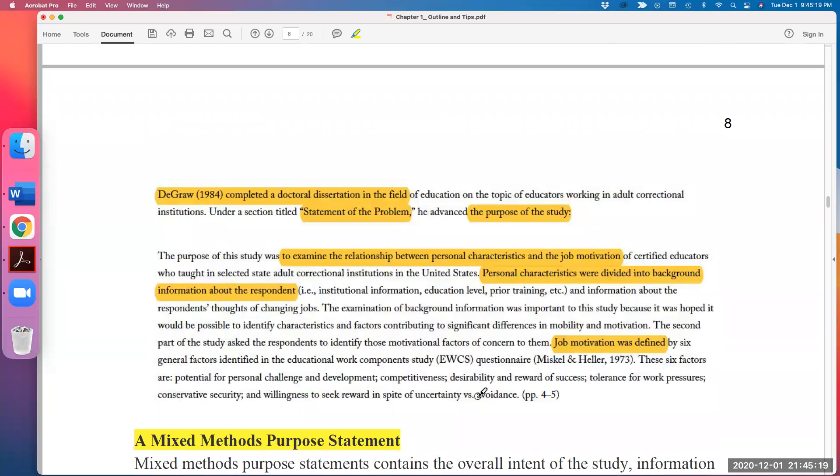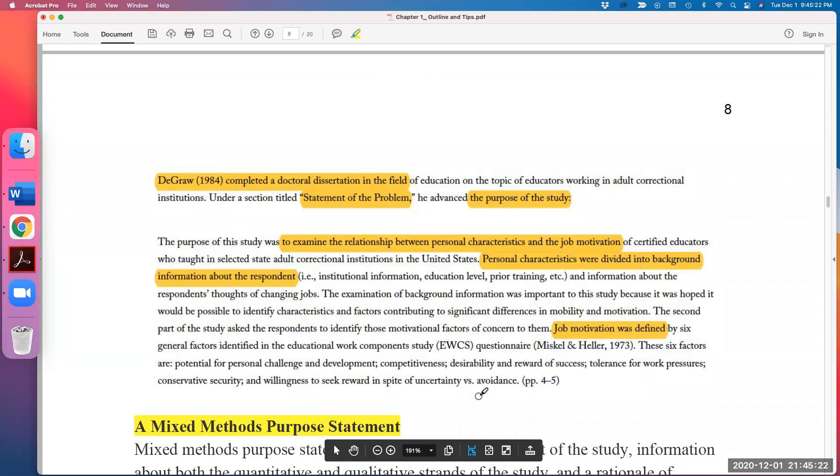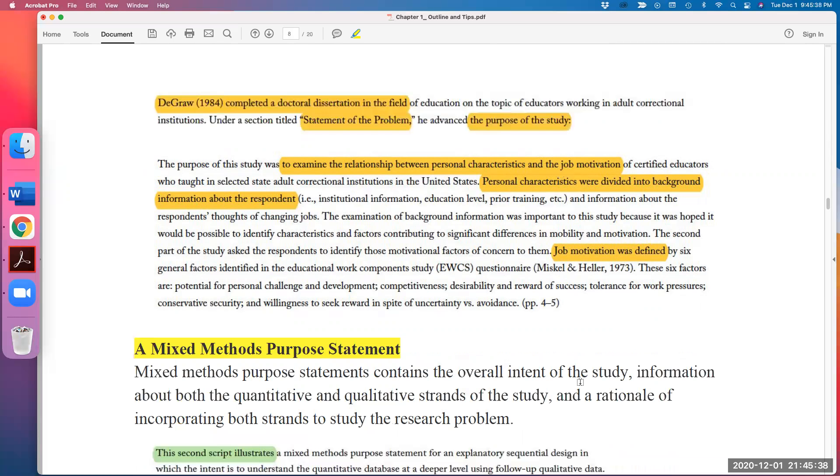I want to stop here for a second. Here is another good example. The purpose of this study was to examine the relationship between personal characteristics and the job satisfaction of certified educators who taught in a selected state adult correctional institution in the U.S. So it does have more details here. Now take a look for the mixed method.